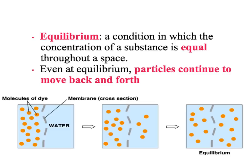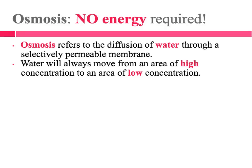Equilibrium is a condition in which the concentration of a substance is equal throughout a space. Even at equilibrium, particles are still going to continue to go back and forth, but they move at an equal rate — it's not like everything just freezes once equilibrium is reached. Osmosis is another type of passive transport, and any type of passive transport requires no energy.